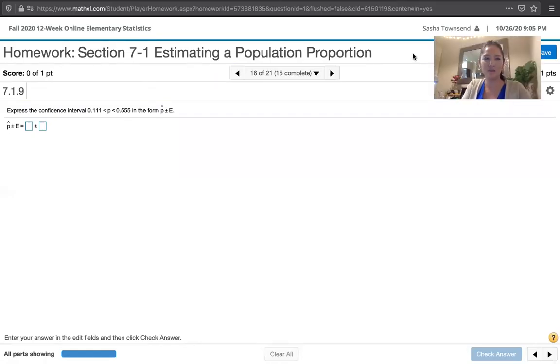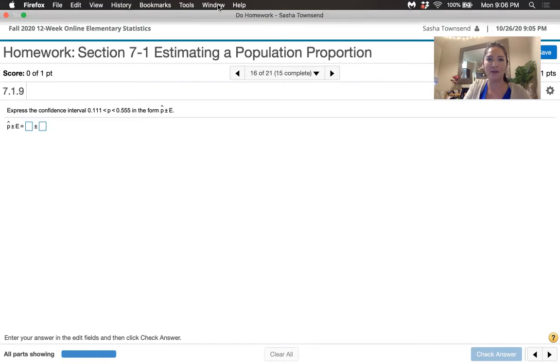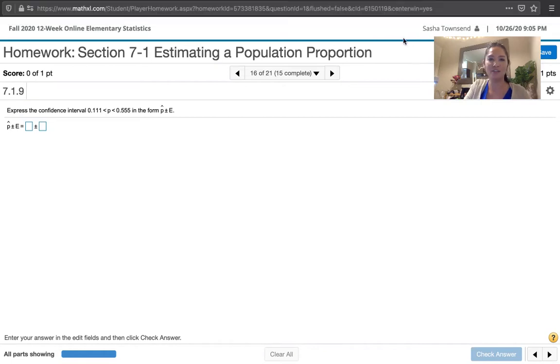In this video we solve problem 7.1.9 from Essentials of Statistics, 6th edition by Mario Triola. We're asked to express the confidence interval 0.111 is less than p is less than 0.555 in the form of p hat plus or minus the margin of error. So I will share my paper with you to show you how to do this.